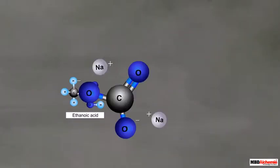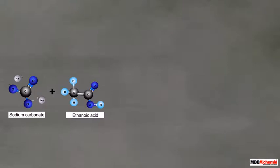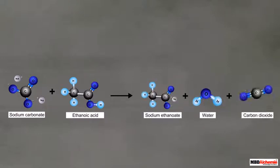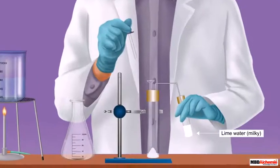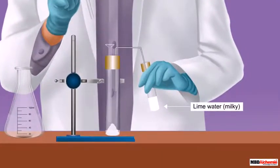It happens because ethanoic acid reacts with sodium carbonate to form sodium ethanoate, water, and carbon dioxide. The gas released is carbon dioxide that turns the lime water milky. Let's recap.